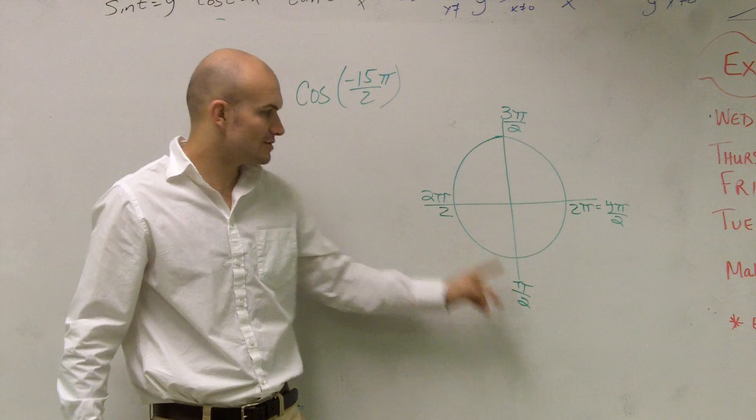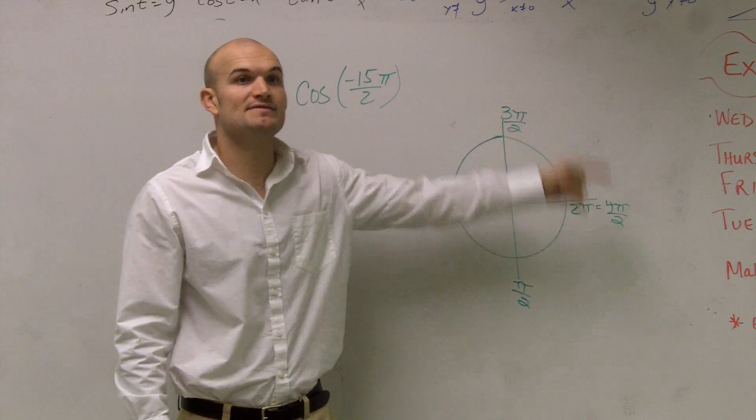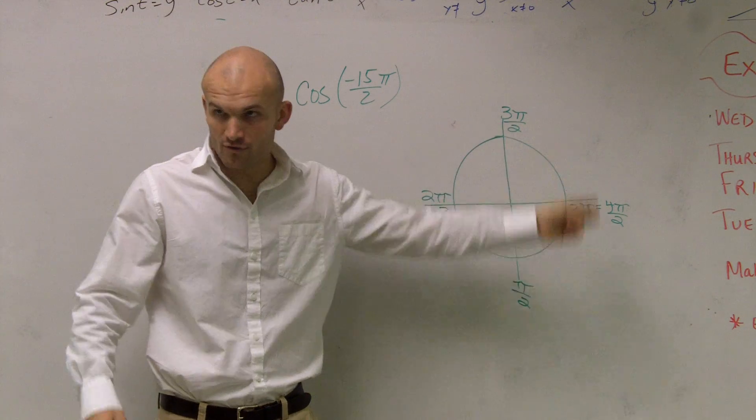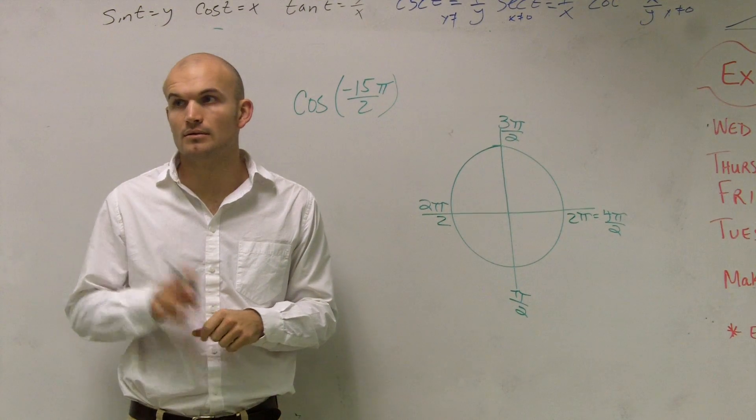Then I could go 5π over 2, 6π over 2, 7π over 2, 8π over 2, 9π over 2, 10π over 2. You can obviously keep on writing this over and over again. So the 15 is right there.